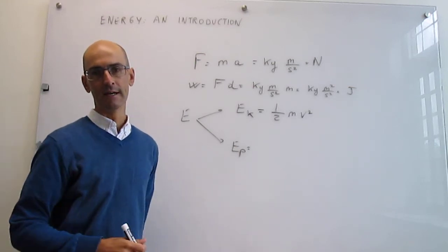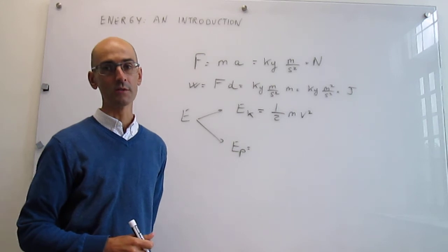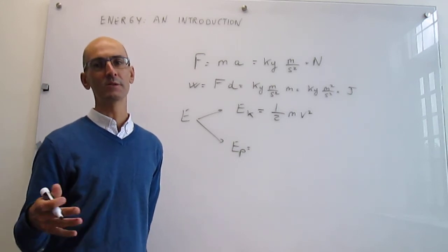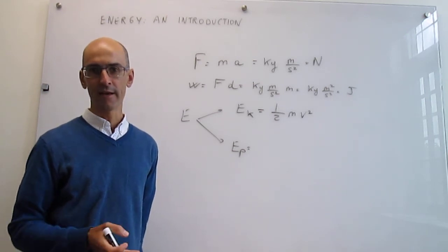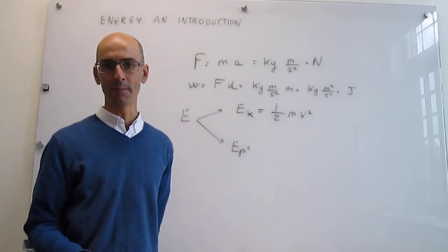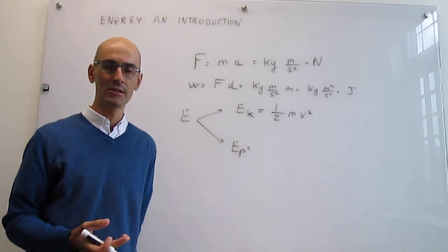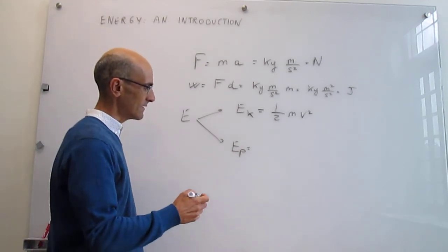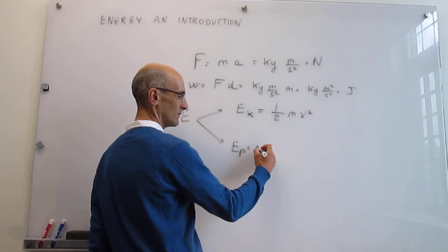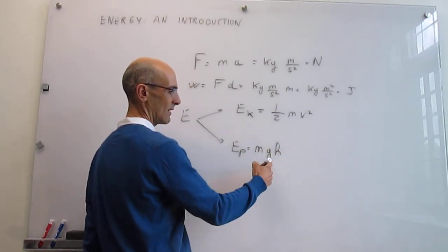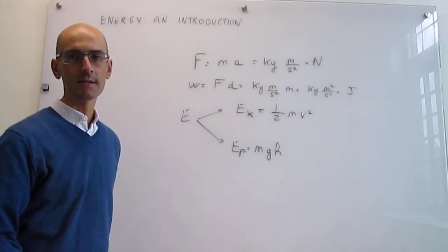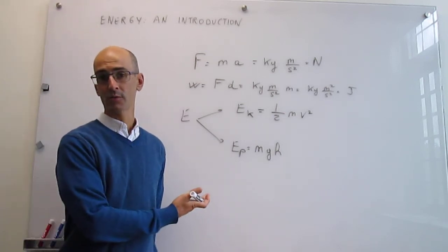Potential energy depends on position and changes much more from system to system. For macroscopic objects like cells, tissues, or humans, the potential energy in a gravitational field is Eₚ = mgh (mass times gravity times height). However, this doesn't apply to much smaller particles.